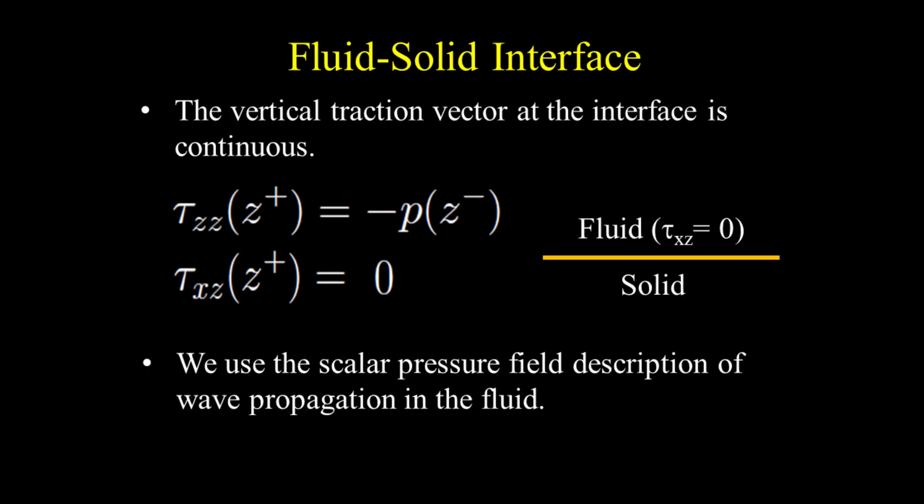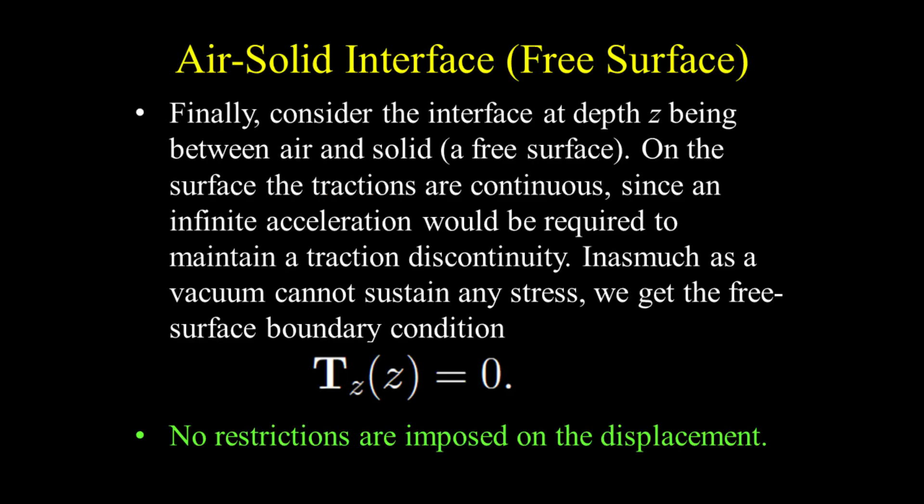The vertical traction vector at the interface is continuous. Note that the shear stresses are zero in the fluid. We use the scalar pressure field description of wave propagation in the fluid. Finally, consider the interface at depth z between air and solid — that is, a free surface. On the free surface, the tractions are continuous, since an infinite acceleration would be required to maintain a traction discontinuity. As a vacuum cannot sustain any stress, we get the free surface boundary condition: vertical traction equals the zero vector.